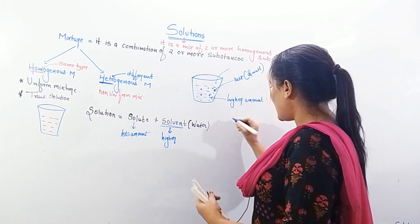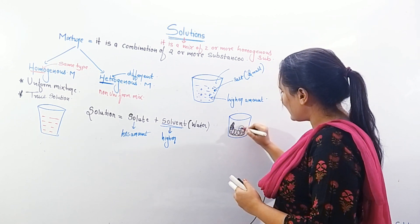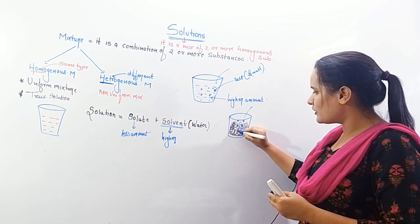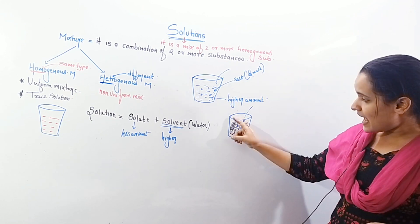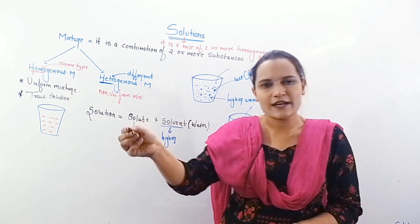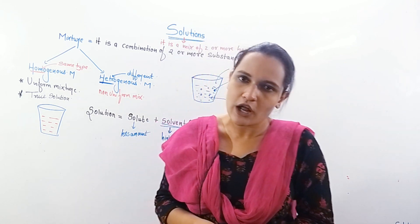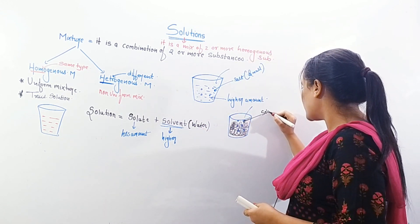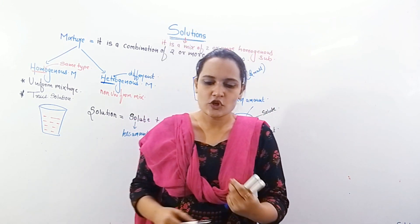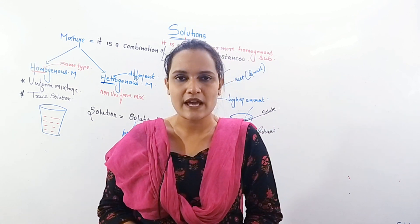Now this can be confusing. If I take a glass completely filled with salt and add only a small amount of water, then the water is present in small proportion — so water becomes the solute and salt becomes the solvent. Anything present in large quantity is the solvent, and anything in small quantity is the solute.